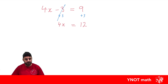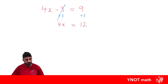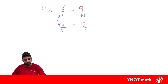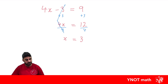Now we're just left with a one-step equation to solve. We need to get x by itself and that 4 is in the way. We get rid of it by doing the opposite operation — 4x means 4 times x, so the opposite is dividing by 4. We do that to both sides, giving us 1x, or just x, equals 12 divided by 4, which is 3. You can always double check: 4 times 3 is 12, and 12 minus 3 is 9.